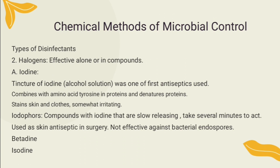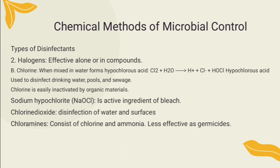Among the halogen antiseptics and disinfectants are chlorine and iodine. Iodine is used as a tincture of iodine, which is an alcohol solution. Combinations of iodine and organic molecules are called iodophors — they include betadine and isodine, both of which contain a surface-active agent called povidone. Iodine combines with microbial proteins and inhibits their function. Chlorine also combines with microbial proteins and is used as sodium hypochlorite or bleach, mostly for household or laboratory disinfection, and as calcium hypochlorite to disinfect equipment in dairies, slaughterhouses, and restaurants. Chloramines contain chlorine together with ammonia and are used to sanitize glassware and eating utensils. Chlorine is also used as a gas to maintain a low microbial count in drinking water.